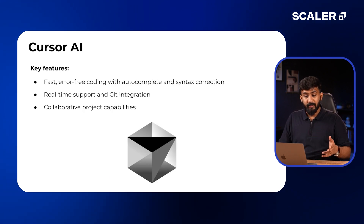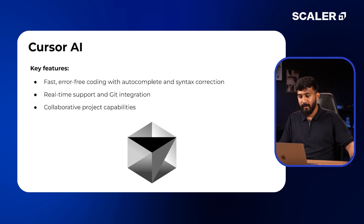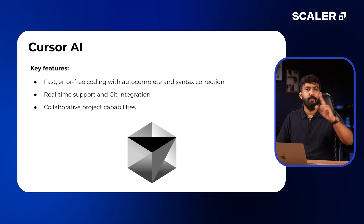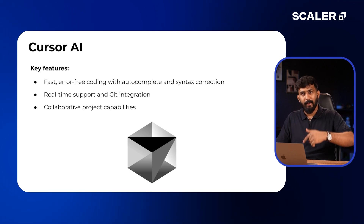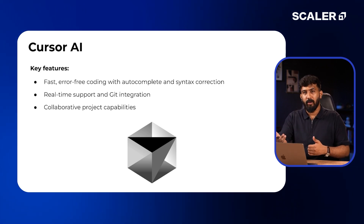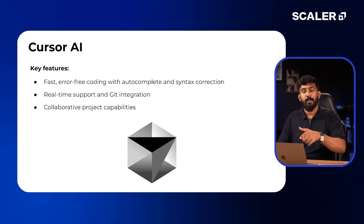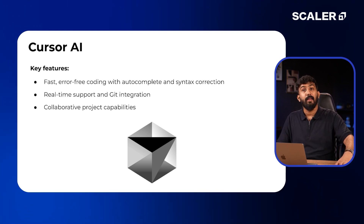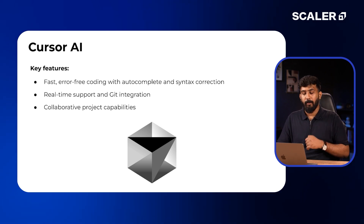Then there is Cursor AI — fast, error-free coding with autocomplete and syntax correction, real-time support, and Git integration. You can integrate Git directly within Cursor AI's own editor, making it even more seamless. There are also collaborative project capabilities. Finally, Cloud Code — you can directly use their API connection. Install it in your terminal, go into your project's directory, launch Cloud, and then directly start prompting to write code snippets, refactor code, or write documentation.